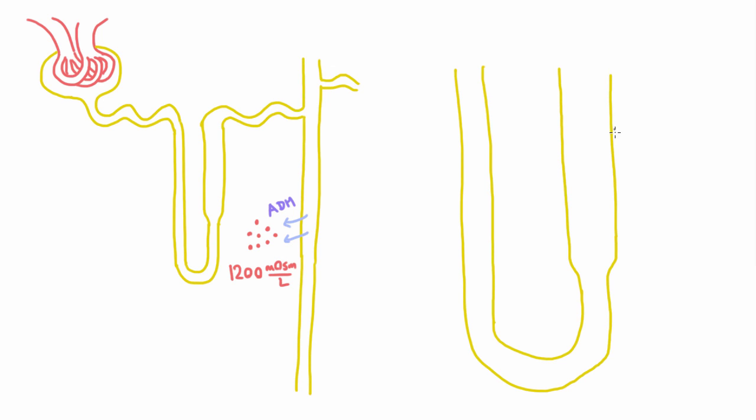So here is a big loop of Henle that we can look at to examine how it concentrates the medulla. And that process is called countercurrent multiplication. And we'll explain why it uses that name in just a second.